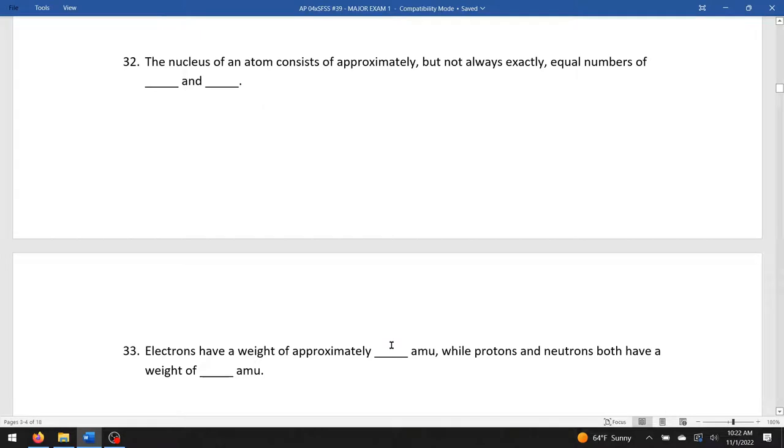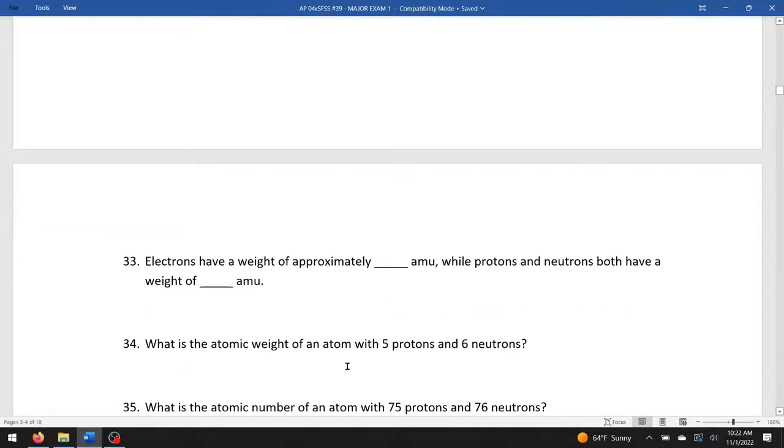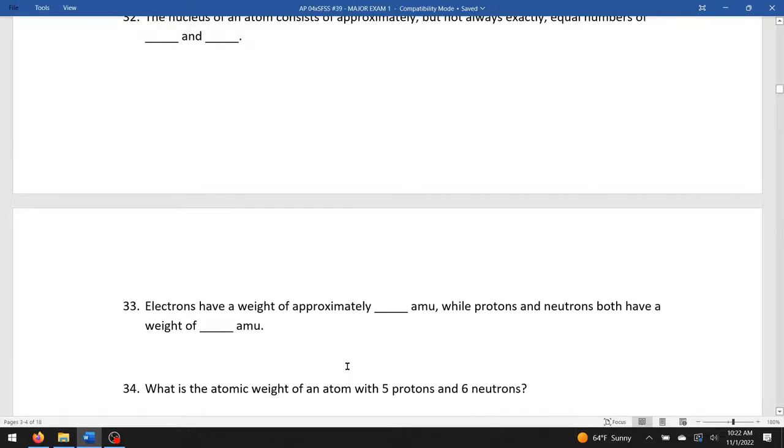Electrons have a weight of approximately how many amu? Well, zero is what we do when we do the math. We'll just go zero while protons and neutrons both weigh one amu. What is an atomic weight of an atom that has five protons and six neutrons? Simply five plus six would be 11.